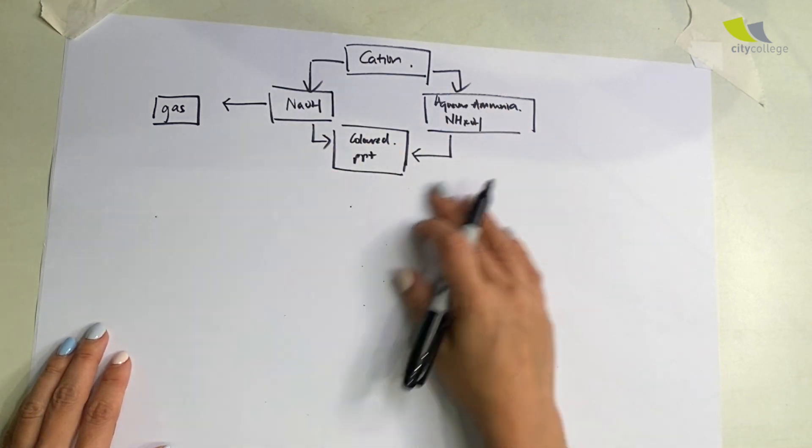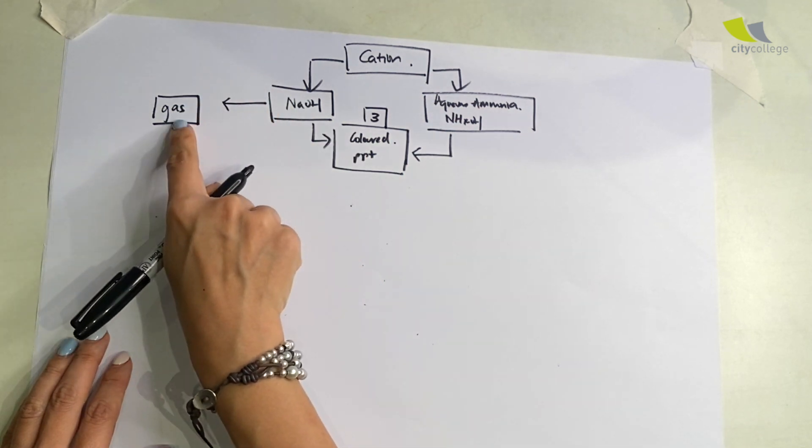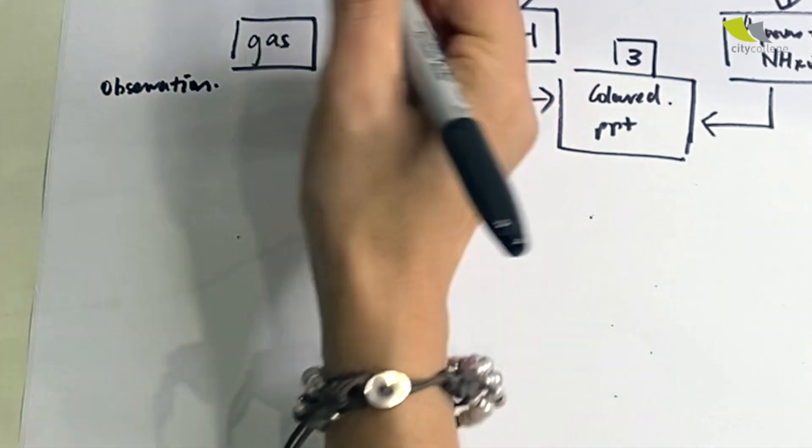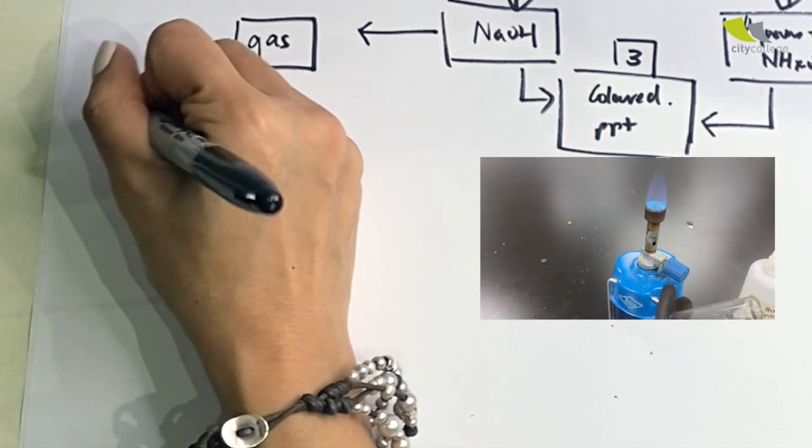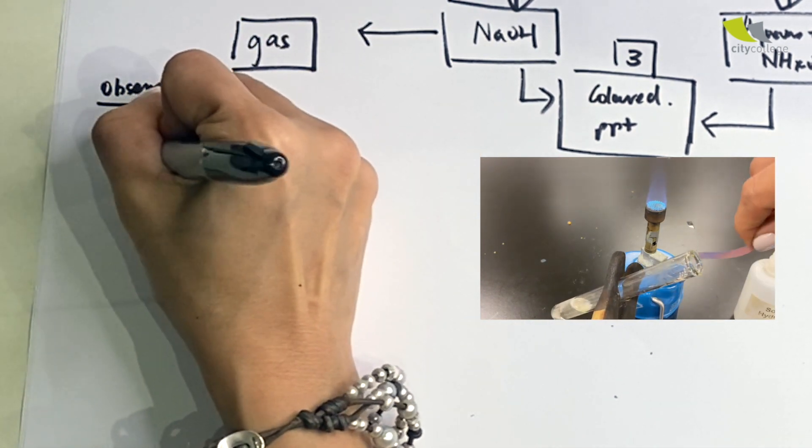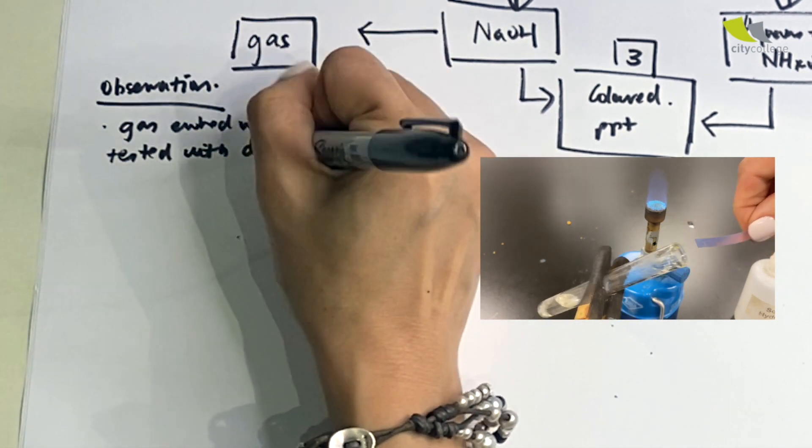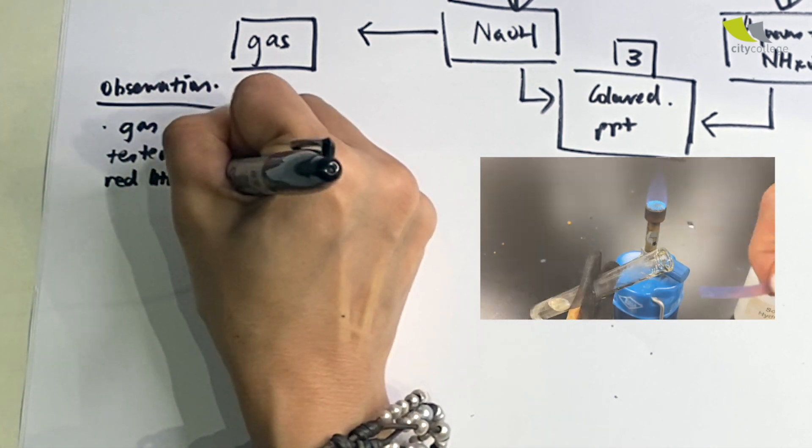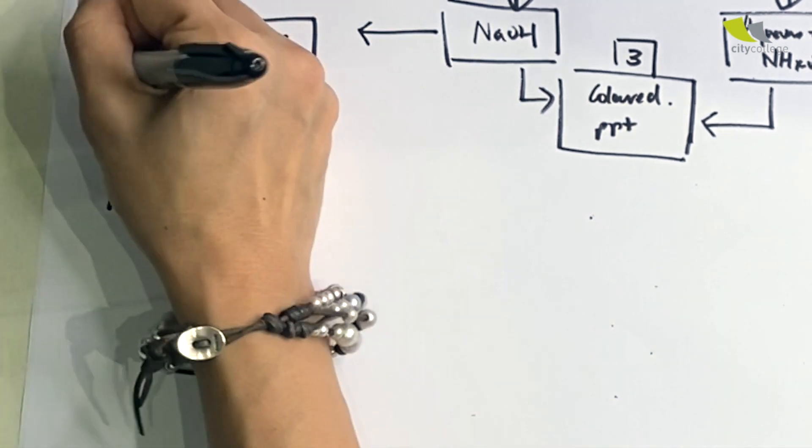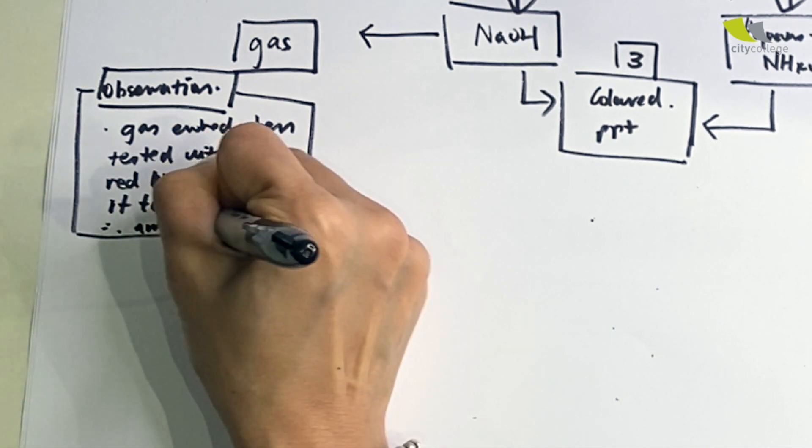We can see that under the cation test, for the color we have three, and there will be one that will give out a gas. Let's go to the one that will give out gas first. Under the observation, gas evolved. When tested with red litmus paper, it will turn blue. Therefore ammonia is present.